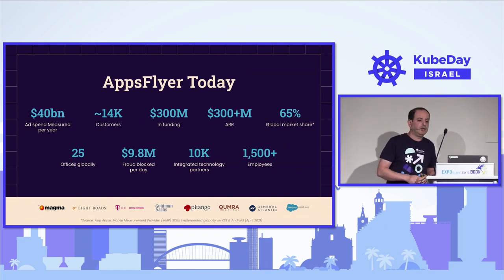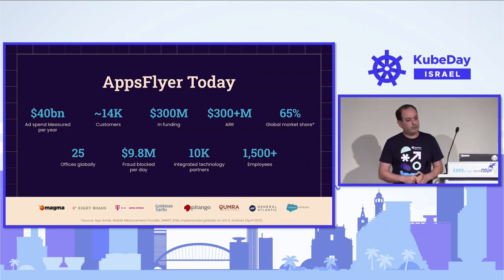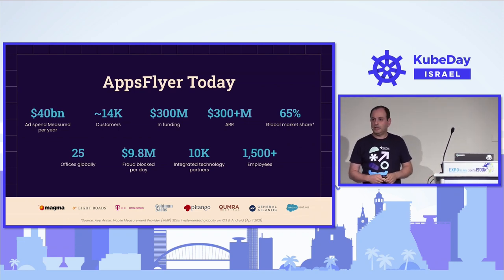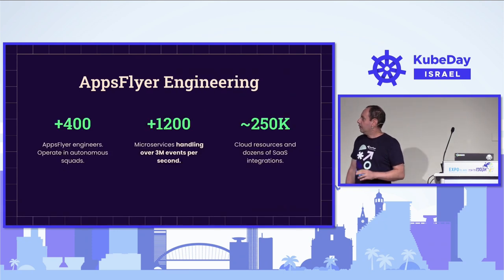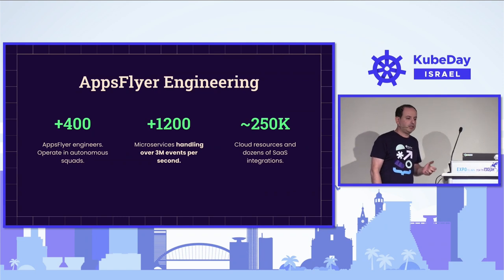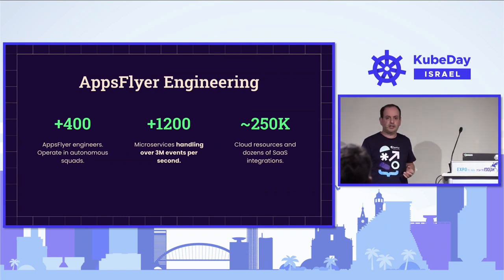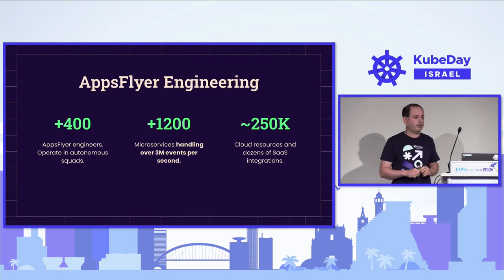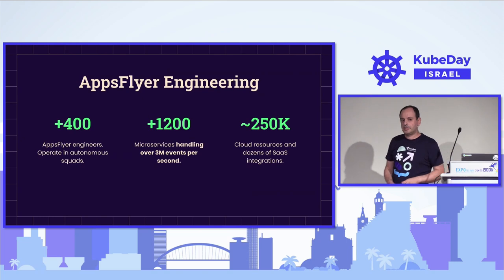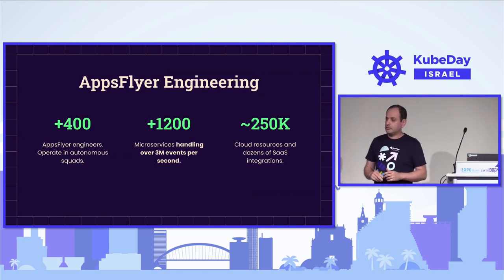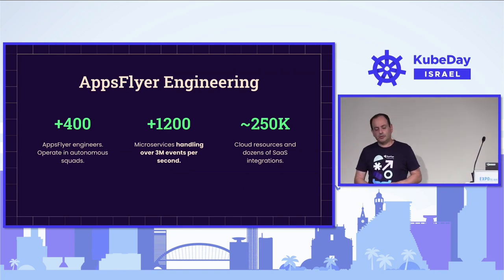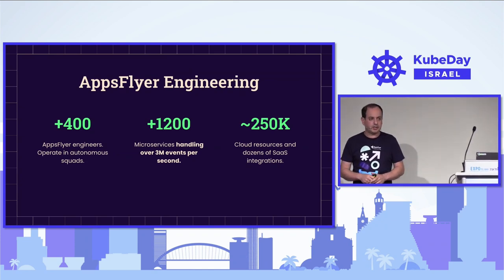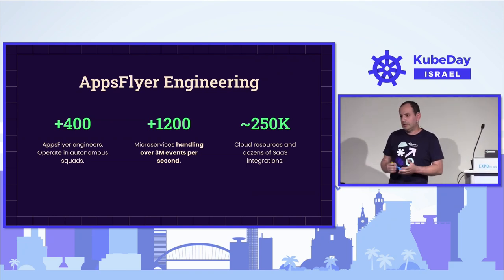AppFlyer is the market leader for mobile attribution. We operate with 14,000 customers and 65% of the global market share. We have about 1,500 employees that operate across the globe. The engineering group has roughly 400 engineers divided into squads, operating around 1,200 microservices that handle roughly 3 million events per second. We operate an infrastructure close to 250,000 cloud resources, and dozens of SaaS integrations and more. These are rough numbers because our infrastructure is growing or shrinking based on demand and customer requirements.